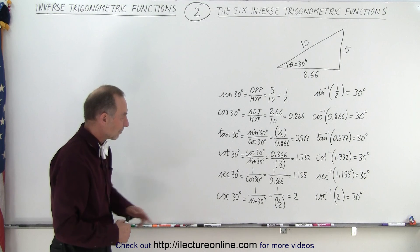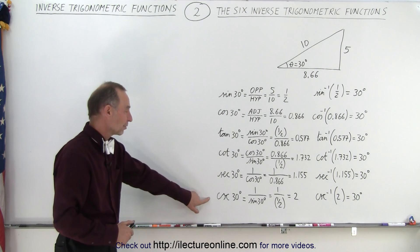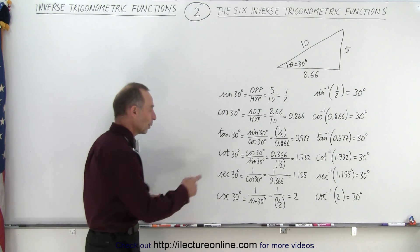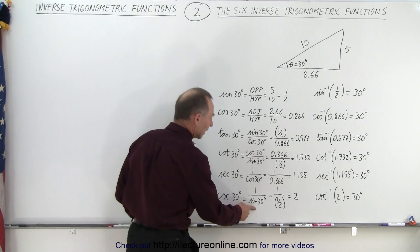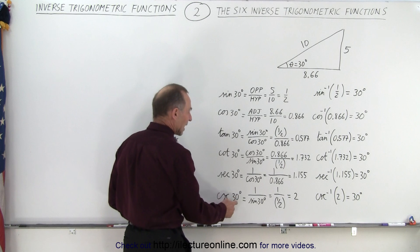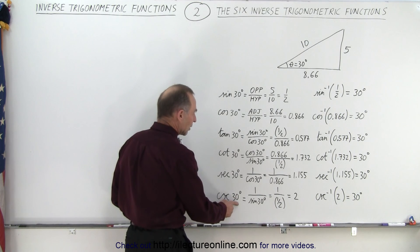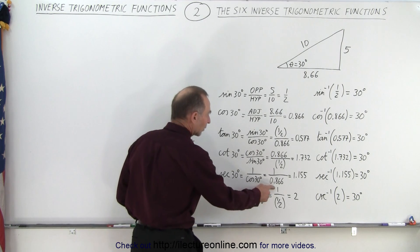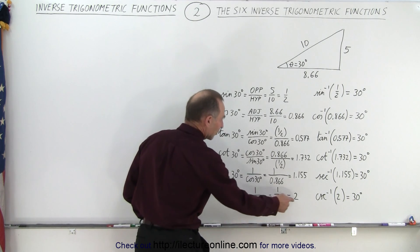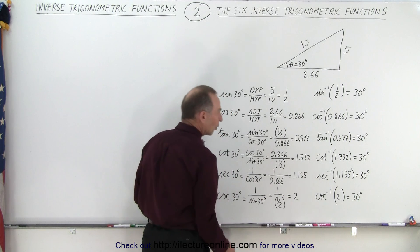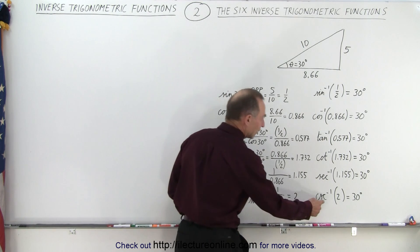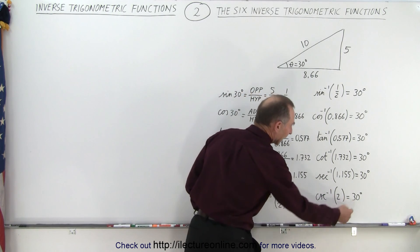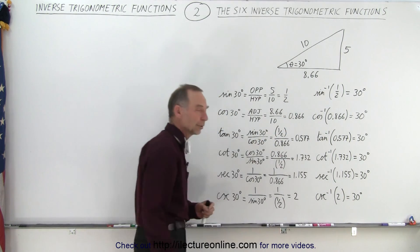Finally we have the cosecant function. The cosecant is defined as 1 over the sine. For an angle of 30 degrees, the cosecant of 30 degrees is 1 divided by one half, which is equal to 2. So if we take the inverse cosecant of 2, we get back the angle of 30 degrees.